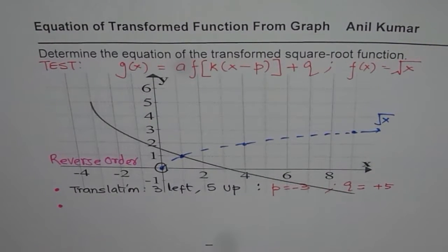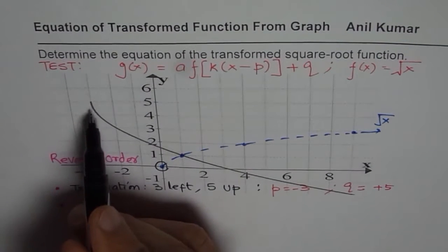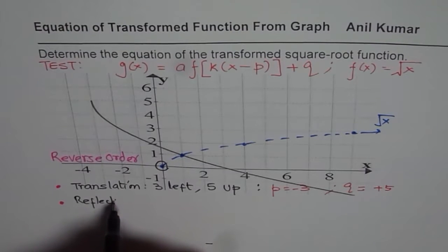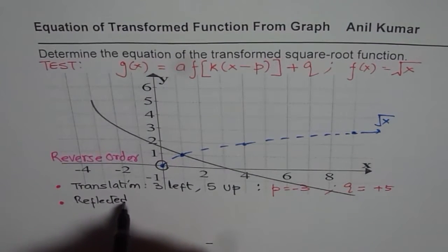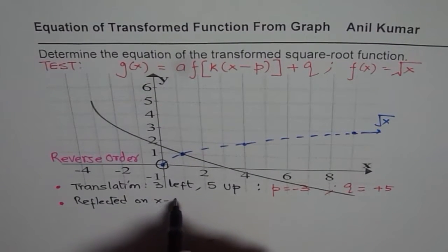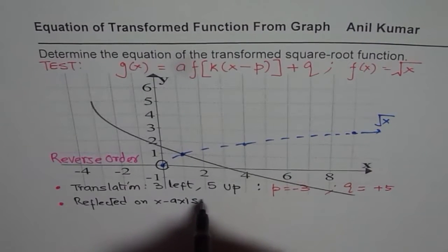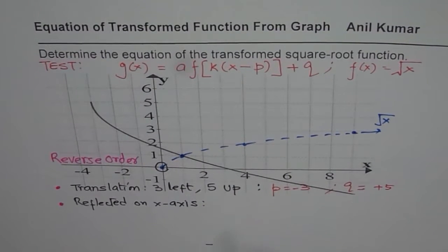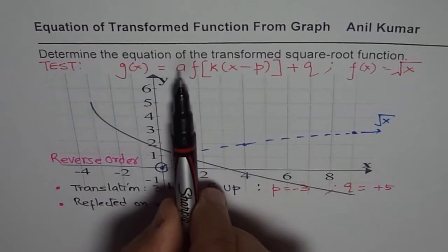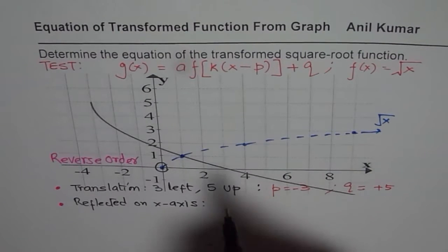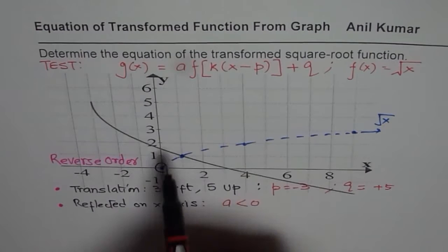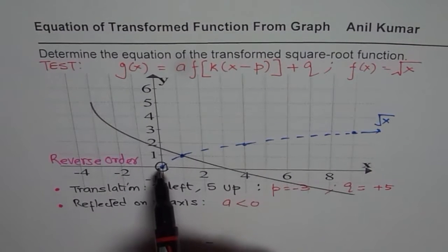Three units left means p = −3, and five units up means q = +5. The second observation is that the function has been reflected on the x-axis. Reflected on the x-axis means the value of a is negative — a < 0. Only then does it get reflected.